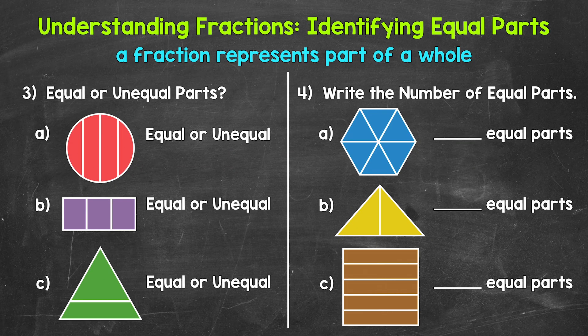Taking a look at number three, we're going to continue identifying equal parts. But instead of yes or no like numbers one and two, we're going to mark each example as having equal parts or unequal parts. Equal parts are the same size; unequal parts are not the same size. Let's start with A. Is the whole divided into equal parts or unequal parts? Well, that circle is divided into unequal parts. Although we have four parts here, these are not fourths because they are unequal.